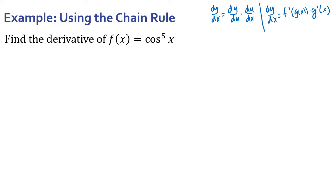So, one way — if we're doing this — find the derivative of cosine to the fifth x. I can rewrite that just so you can easily see how this is going to use the chain rule. We don't have a derivative formula for cosine of x to the fifth power, but I do have a formula for cosine of x, and I do have a formula for u to the fifth power — something to the fifth power.